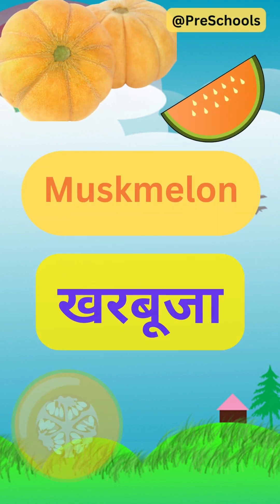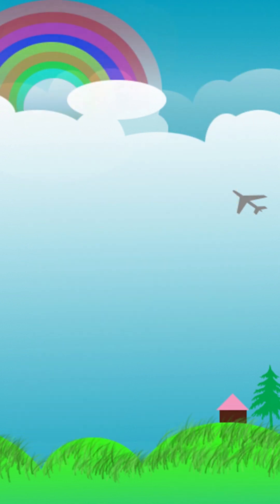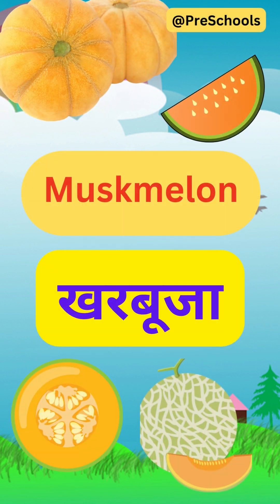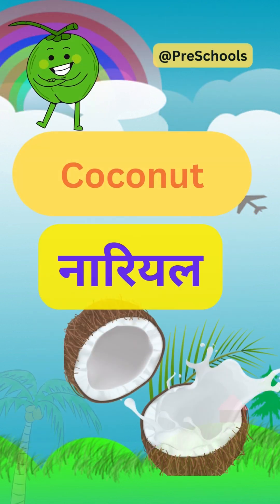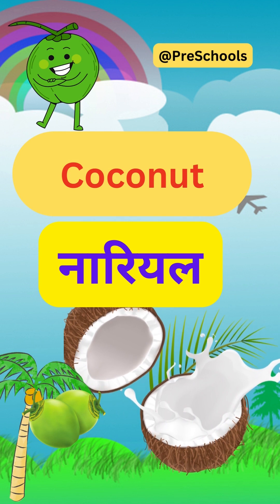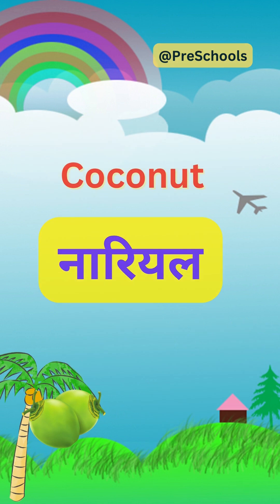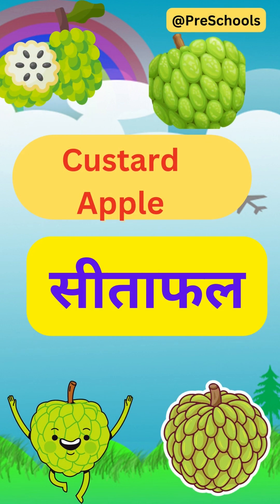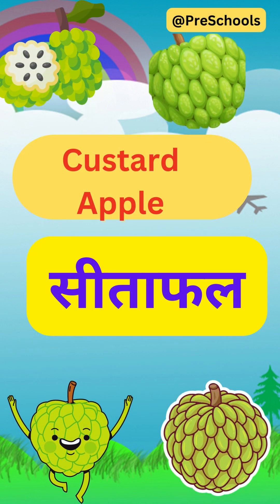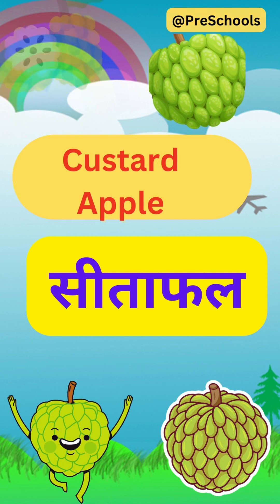Muskmelon. M-U-S-K-M-E-L-O-N. Muskmelon. In Hindi, Carbuja. Coconut. C-O-C-O-N-U-T. Coconut. In Hindi, Nariyal. Custard Apple. C-U-S-T-A-R-D A-P-P-L-E. Custard Apple. In Hindi, Sitafal.